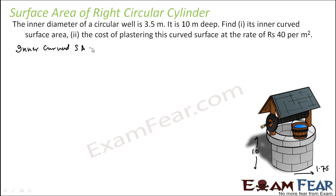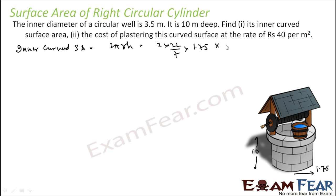The inner curved surface area is nothing but 2πrh. Putting in the values: 2 × (22/7) × 1.75 × 10, which comes out to be 110 meters square. The first part is done.